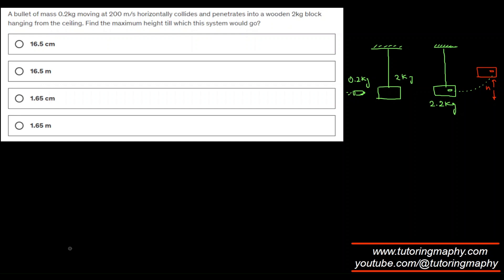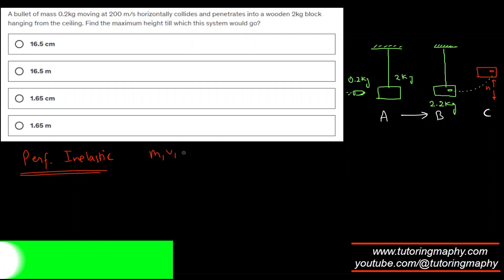Now from A to B, momentum is conserved. This is a perfectly inelastic collision because the objects stick together and they become a single unit. So I'm gonna say that m1v1 plus m2v2 is equal to m1 plus m2 times some unknown v that we do not know.